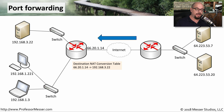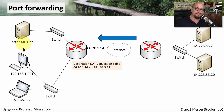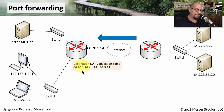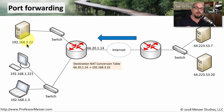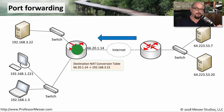Port forwarding is an inbound communication — devices on the internet communicating to internal devices. These internal devices have a 192.168 address, meaning they are private IP addresses, and the router provides the network address translation. We've configured this router so that anyone inbound on 66.20.1.14, which is the external address, has that traffic translated to 192.168.3.22, which is the server on the inside of the network with a private IP address. Traffic from internet devices hits the router, where the translation occurs and the traffic is sent inside the network to the appropriate device.